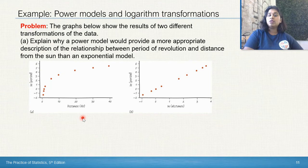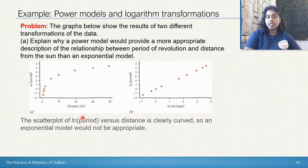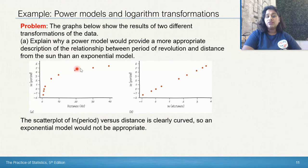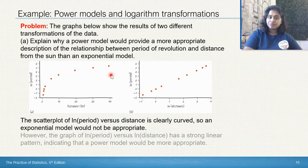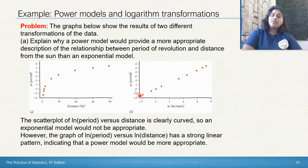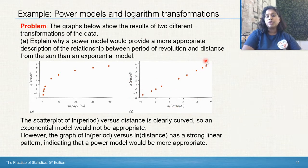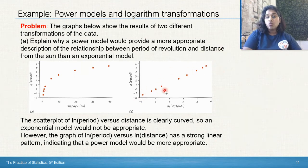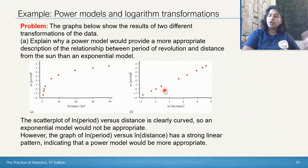We're going to explain why a power model would provide a more appropriate description of the relationship between period of revolution and distance from the sun than an exponential. If we look at the scatter plot of the natural log of the period versus the distance, it is still clearly curved. So an exponential model, not going to be very appropriate. But the graph of the natural log of the period versus the natural log of the distance has a strong linear pattern. So a power model would be more appropriate. You're just trying to figure out which transformation, according to some of the stuff I showed you earlier, helps you create that linear line.